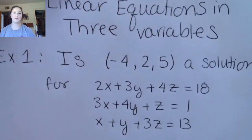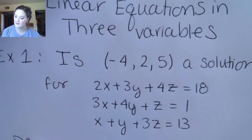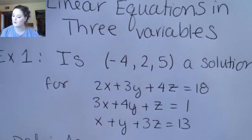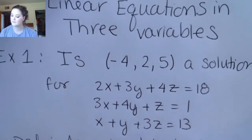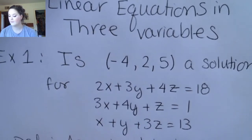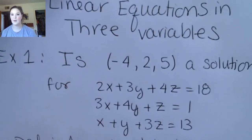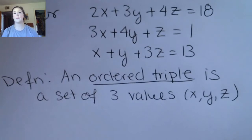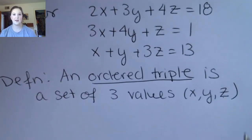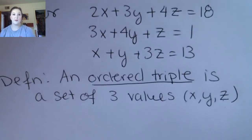To check a solution, you want to plug the solution in. Before we even do that, I want to point out this thing — it's called an ordered triple. An ordered triple is just like an ordered pair, but there's a third coordinate. That third coordinate is the Z value, so you just list them in order: X, Y, and Z. It's just like an ordered pair but for three dimensions.